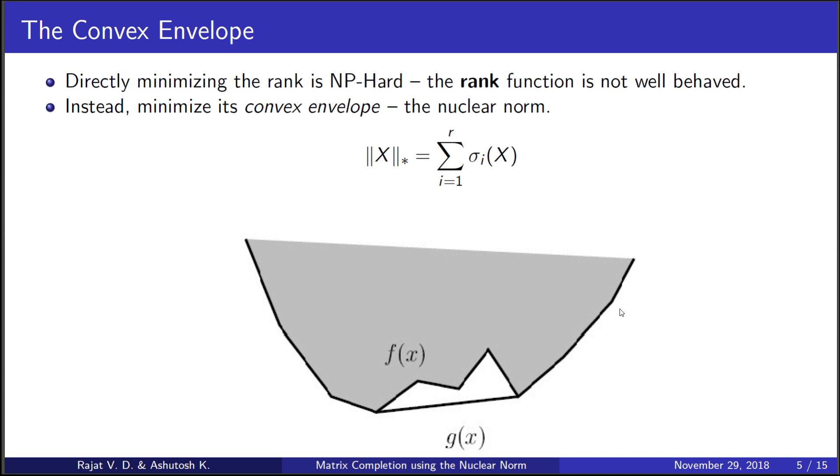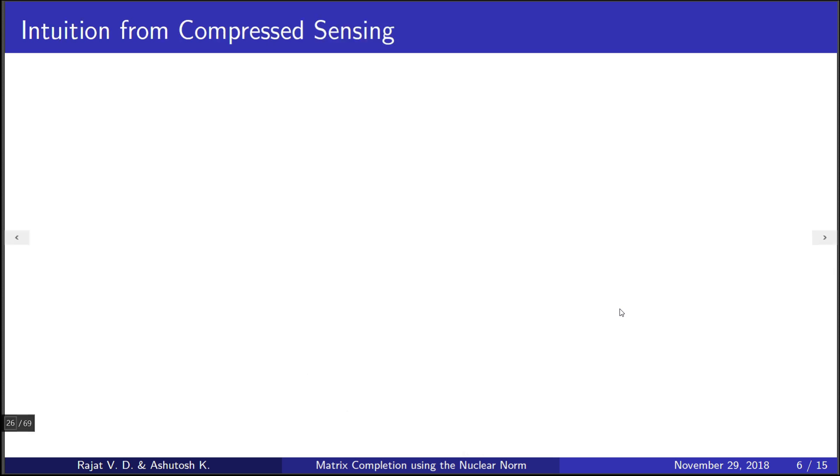We can also get some intuition for why minimizing the nuclear norm leads to low-rank solutions by borrowing ideas from compressed sensing. First, we observe that the nuclear norm is equal to the L1 norm of the singular values because they're always positive. Now, from compressed sensing, we know that minimizing the L1 norm of a vector leads to sparse solutions.